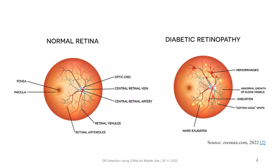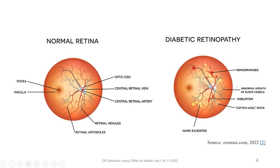Here is a representation of the normal retina and diabetic retinopathy patients' retina. We can easily see that there are several differences, like hard exudates found in the diabetic retinopathy patients, as well as hemorrhages, an abnormal growth of blood vessels, aneurysms, and what we call cotton wool spots. These are the identifiers we use in our convolutional neural networks. Depending on what type and form of these exist, we can define the severity of the disease, such as class 0, class 1, class 2, and so forth.